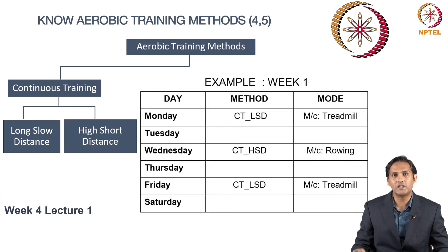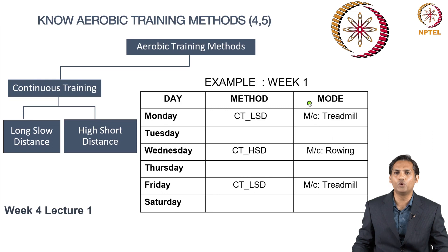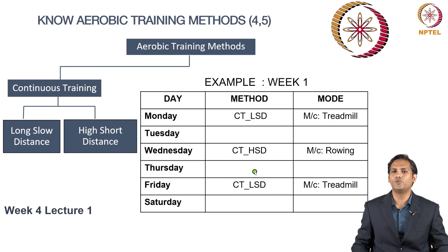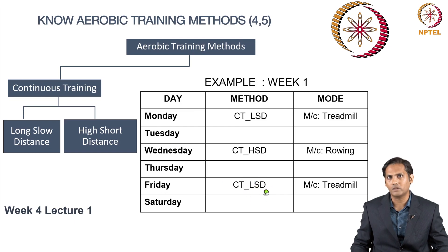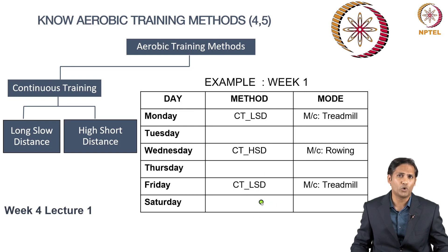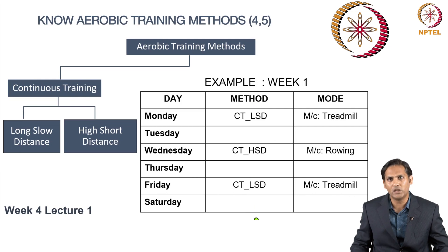A weekly routine when you choose the continuous training method of aerobic training would look like: on Monday, continuous training using long slow distance on the treadmill; on Wednesday, continuous training but high short distance where the intensity is much higher; and on Friday, again long slow distance method. In this way your workout would not be monotonous and there will be variety in your weekly workout routines.